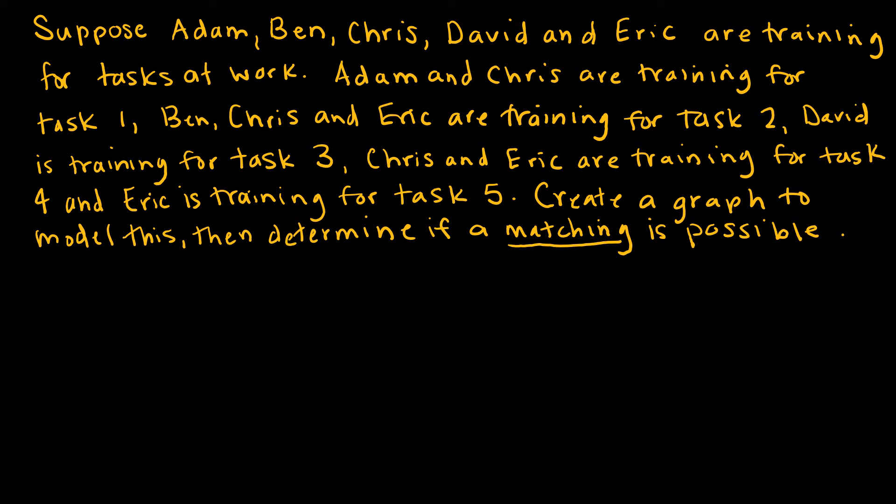So if I want to create a graph to model this, I'm going to use Adam, Ben, Chris, David, and Eric. Those are my people. Now obviously this is going to be a bipartite graph because Adam is not going to learn Ben or Chris or David or Eric. Adam is going to learn a task. So now I have to put my tasks out. So my task 1, 2, 3, 4, 5. Now all I have to do is draw in the lines that connect the appropriate people to the appropriate tasks.